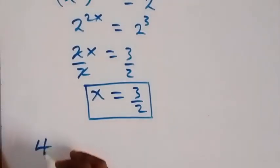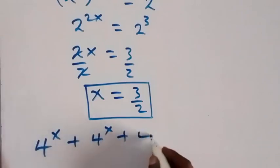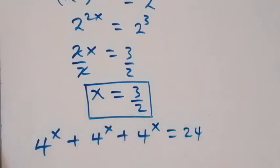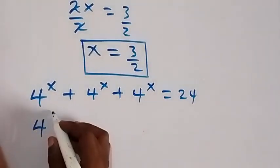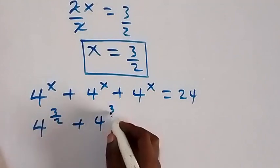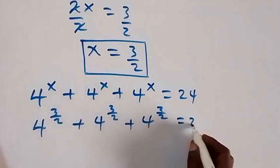So we have 4^x + 4^x + 4^x = 24. When we substitute the value of x, we have 4^(3/2) + 4^(3/2) + 4^(3/2) = 24.